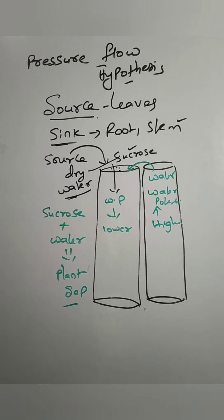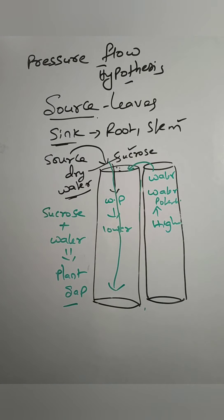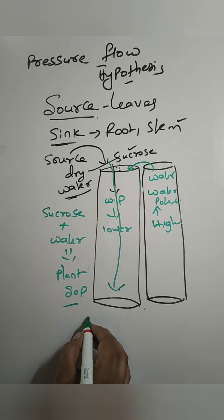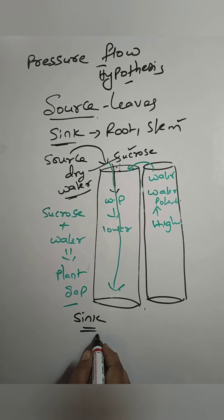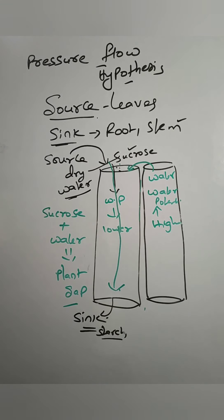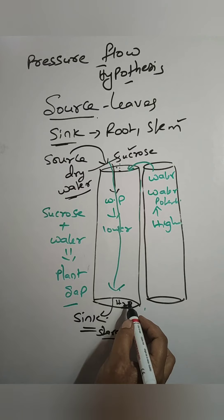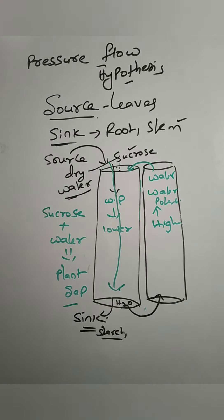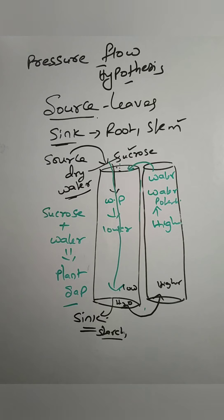The plant sap can now move freely through the phloem to reach the sink. Pressure is exerted to move sucrose to the other region, which is why it is called the pressure flow hypothesis. The sugar molecule reaches the sink where it is stored as starch. Then the water needs to move back to the xylem.